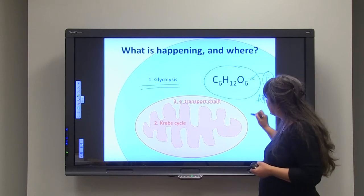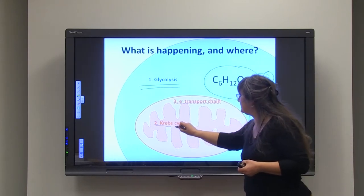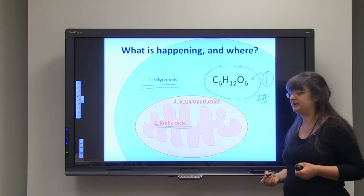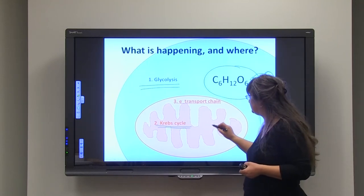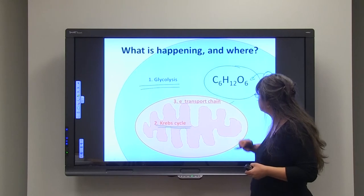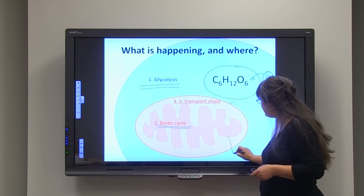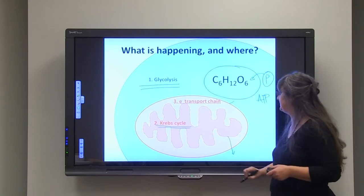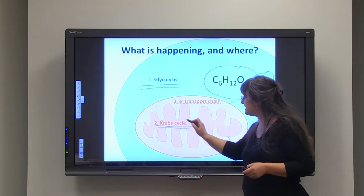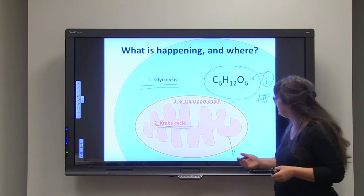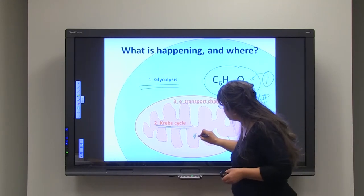Now, after that, the next step is Krebs cycle or citric acid cycle that is happening in mitochondrial matrix. So, this is the outside portion, outside membrane of the mitochondria. This is the inner membrane of the mitochondria. Very important to remember. And inside of the inner membrane of the mitochondria, that part of the organelle is called matrix. And that is where Krebs cycle or citric acid cycle is happening.